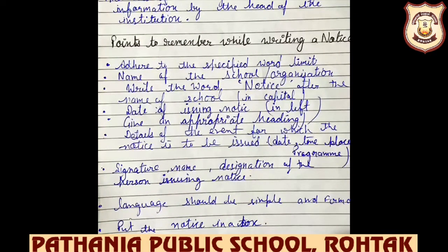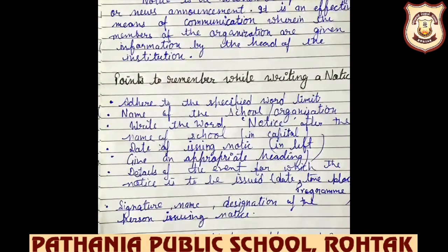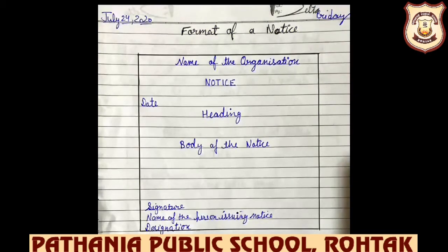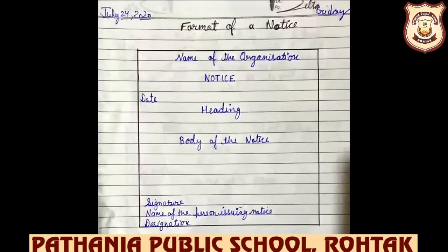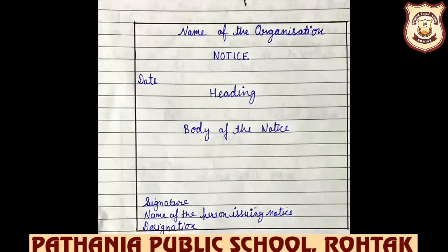The language should be simple, and we have to put the notice into a box. This is the format of a notice. Within a box, we are going to draft a notice: first the name of the organization, then 'NOTICE', then the date, then a heading, then the body of the notice describing the event, date, and time. You can see the signature, name of the person issuing the notice, then the designation — for example, principal, head boy, or head girl — whoever has issued the notice.